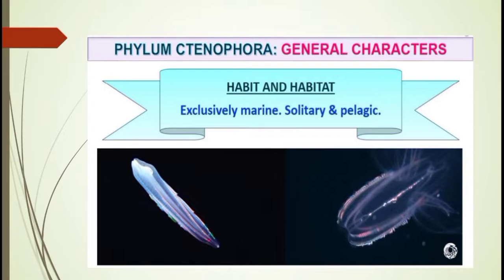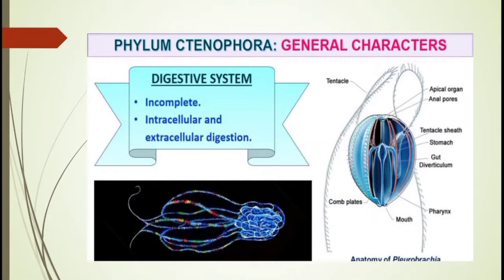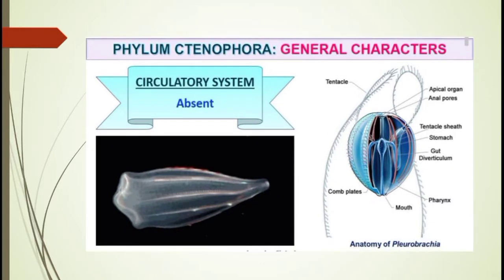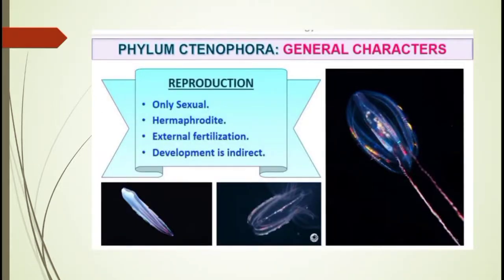They may also be free living. The digestive system is incomplete, and digestion occurs by both intracellular and extracellular means — that is, inside and outside the cell. Respiratory system, circulatory system, and skeletal system are all absent in ctenophores.